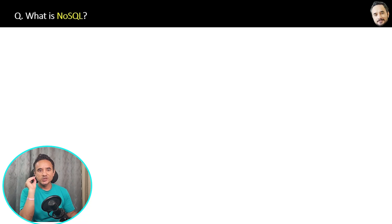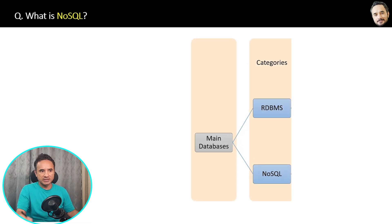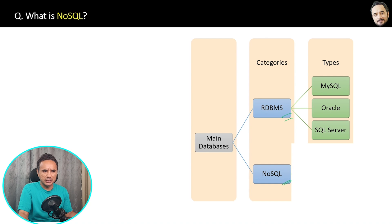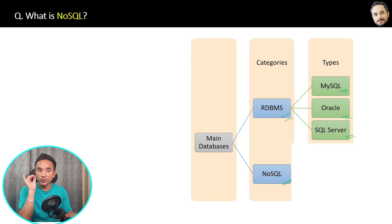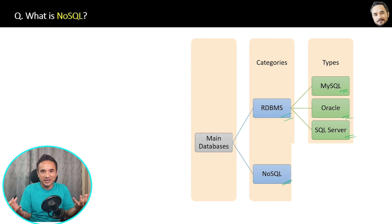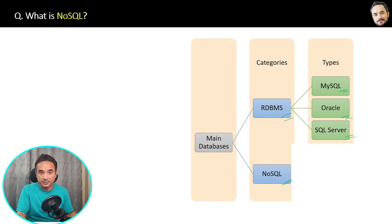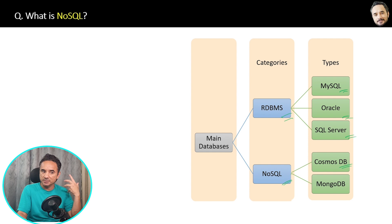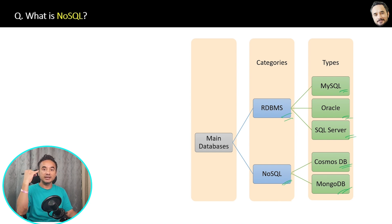What is NoSQL? We have two categories of databases: RDBMS and NoSQL. You already know RDBMS — MySQL, Oracle, SQL Server — these are relational databases with tabular format data. The second category is NoSQL, which stands for 'Not Only SQL' — it is even more than SQL. It can store structured, semi-structured, and unstructured data, whereas SQL can store only structured data in tabular format. Examples of NoSQL databases include Cosmos DB and MongoDB.